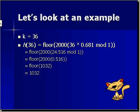In our example, setting K equals 36. It equals the floor of 2000 times the quantity 36 times 0.681 modulus of 1.